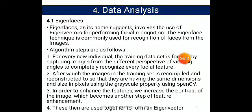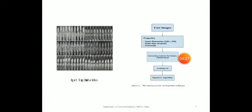We increase the contrast of the image, which becomes another step of feature enhancement. These are then used together to form an eigenvector. The first diagram shows a sample database of faces; the second diagram explains the algorithm of eigenfaces. First step is user images; second, properties — same dimension like 250x250, same size in pixels, grayscale. Third step is increasing the contrast for feature enhancement; fourth step is training set; last is applying the eigenface algorithm.